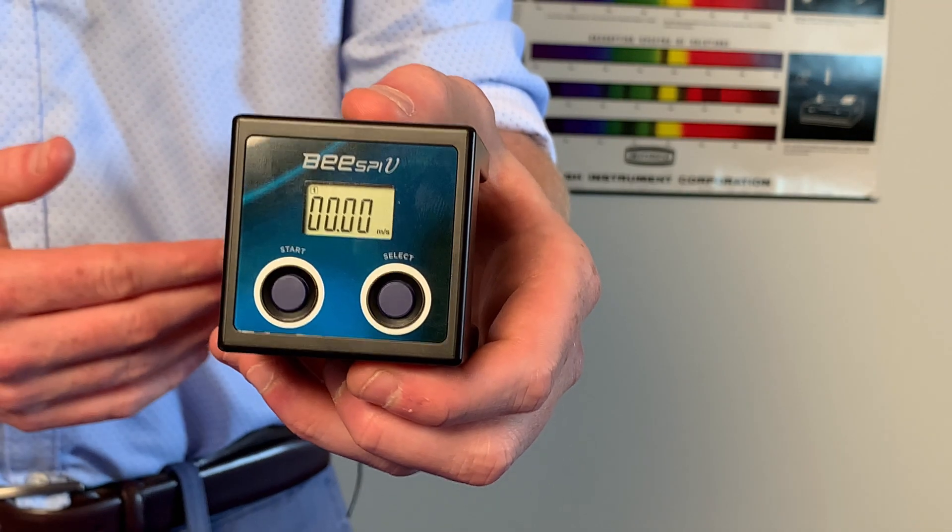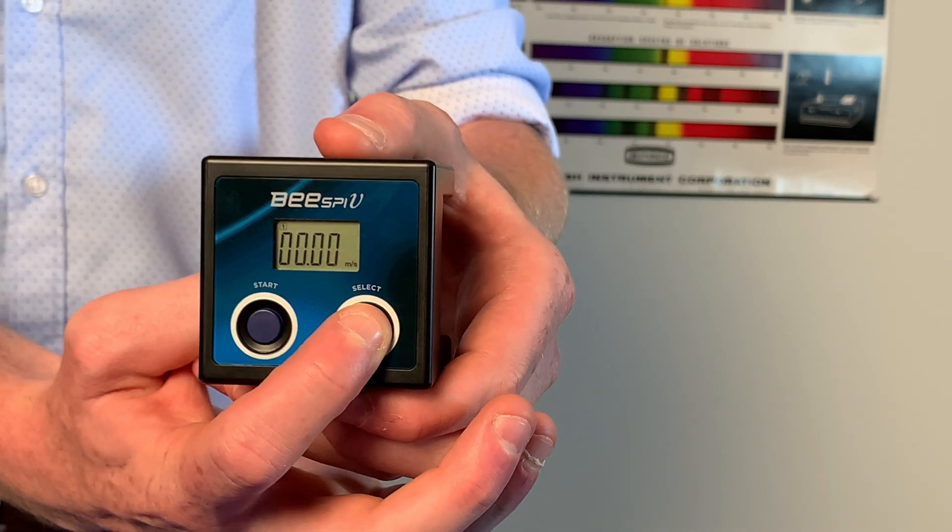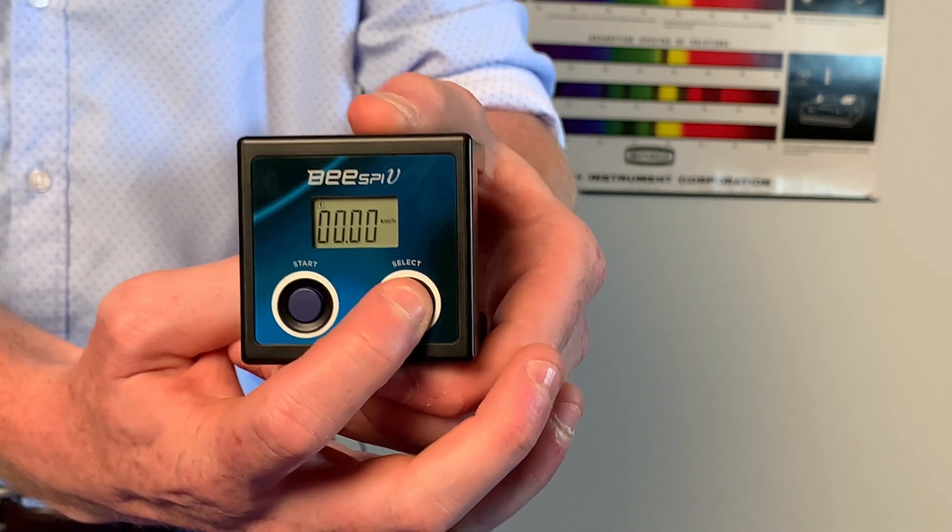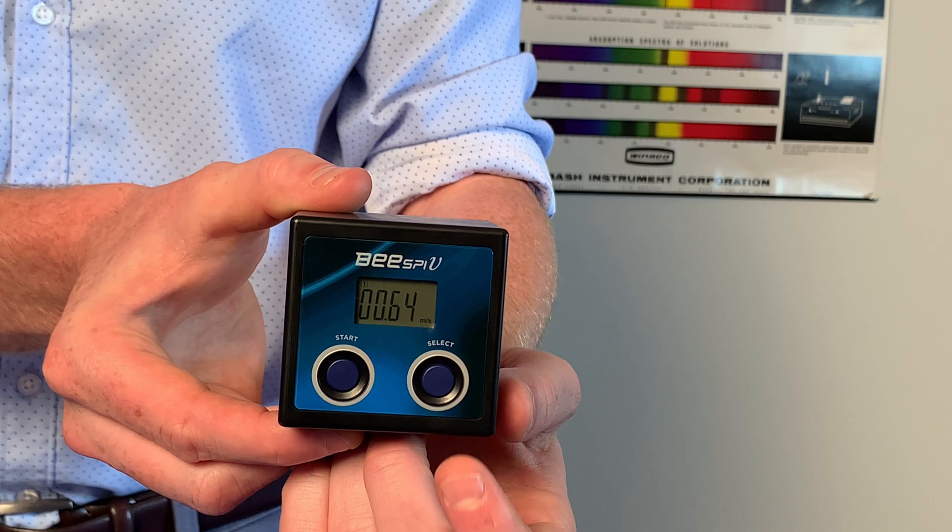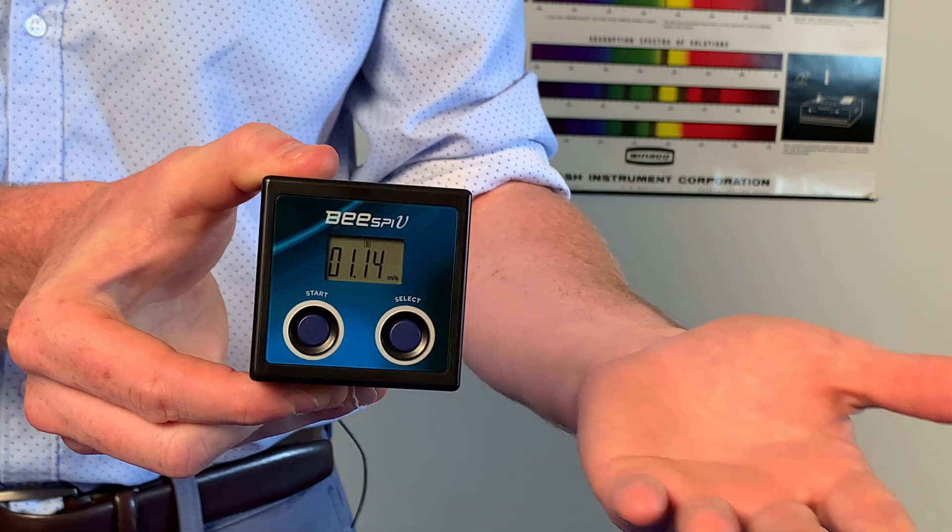Teachers will be excited to know it measures velocity in meters per second and by holding down the select button you can also get readings in kilometers per hour and centimeters per second. You can also simply tap the select button to recall the five most recent measurements from prior data sets or experiments.